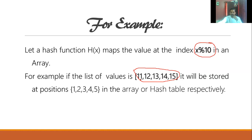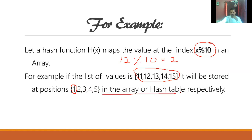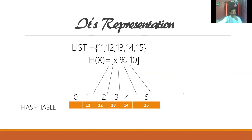Applying the hash function x mod 10: 11 mod 10 gives remainder 1, so 11 is stored at position 1. 12 mod 10 gives remainder 2, stored at index 2. Similarly, 13 at index 3, 14 at index 4, 15 at index 5. These are stored in an array which we call a hash table.